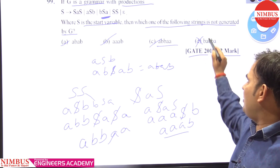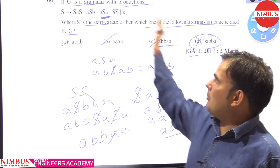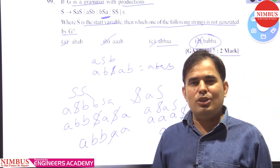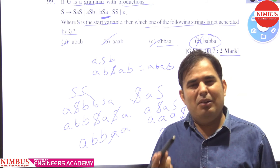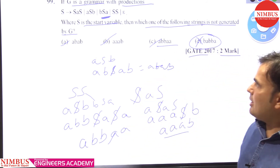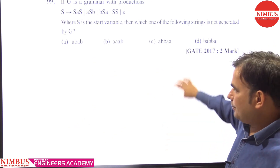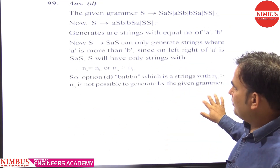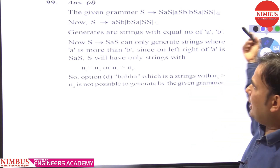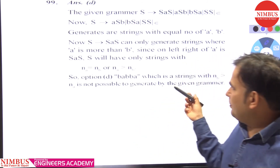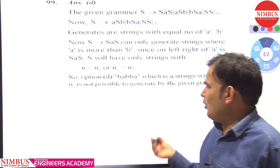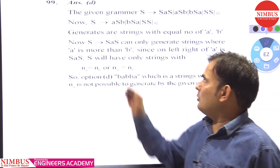The remaining option is D, which means this string is not generated by the given grammar. In TOC, most questions can be solved by checking through the options. Option D is correct — you can simply eliminate other options and choose D.